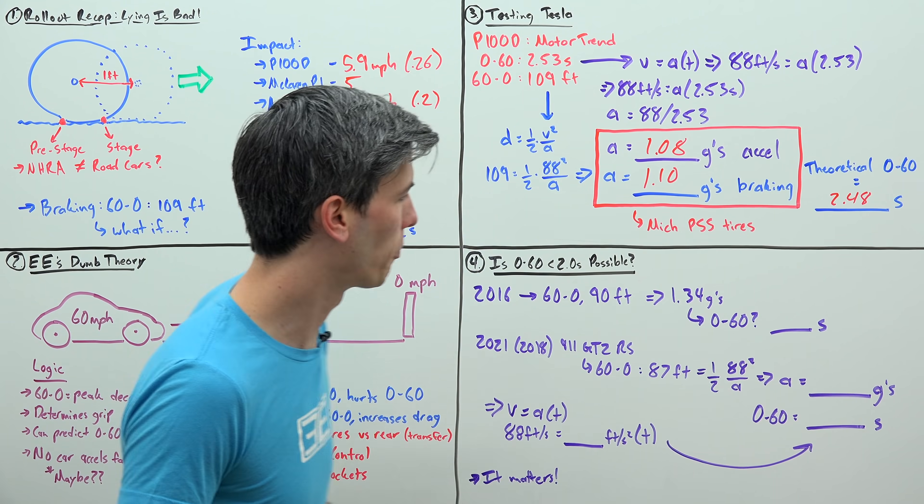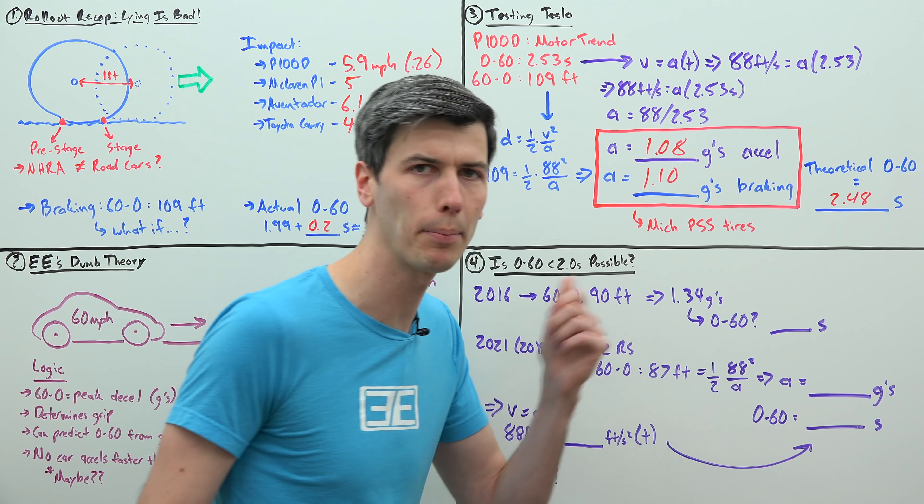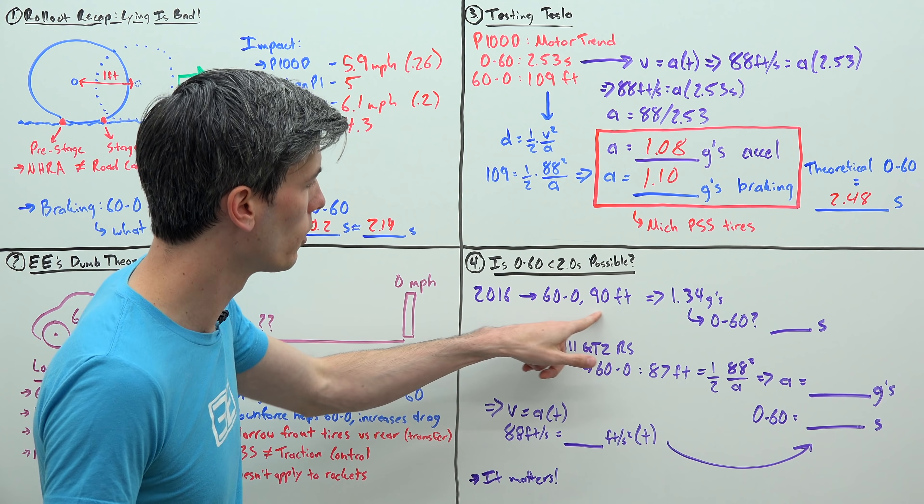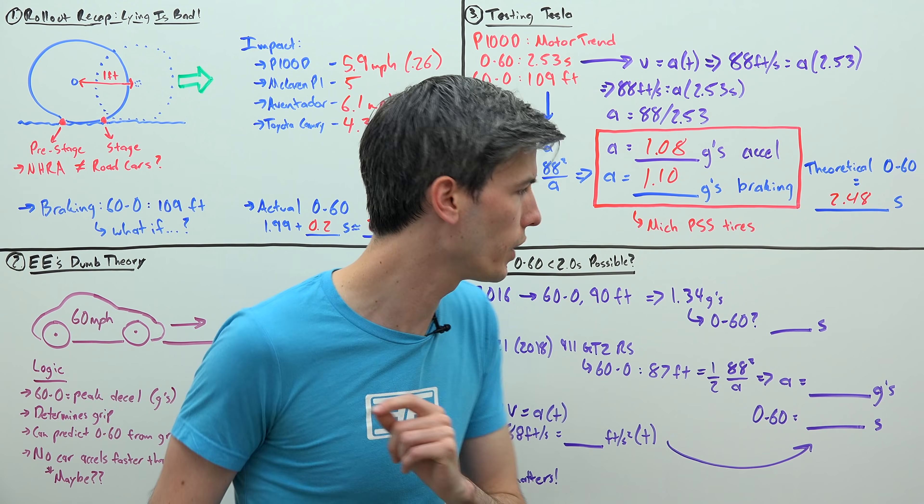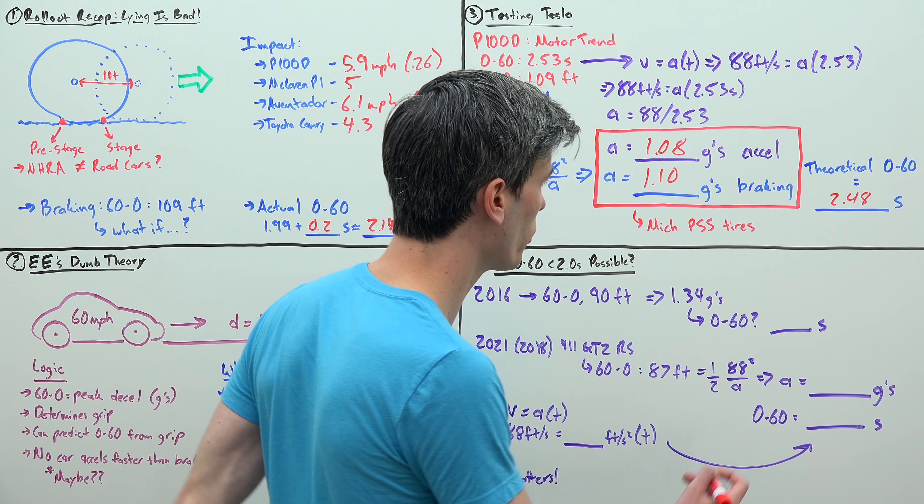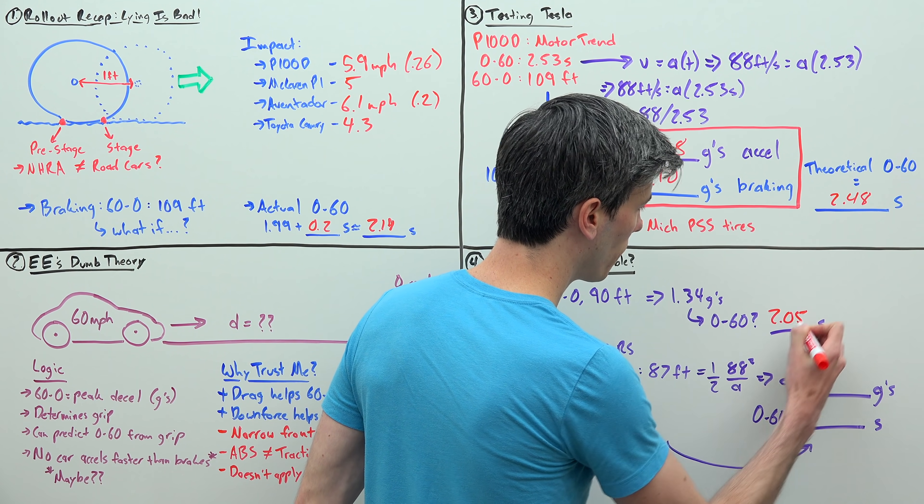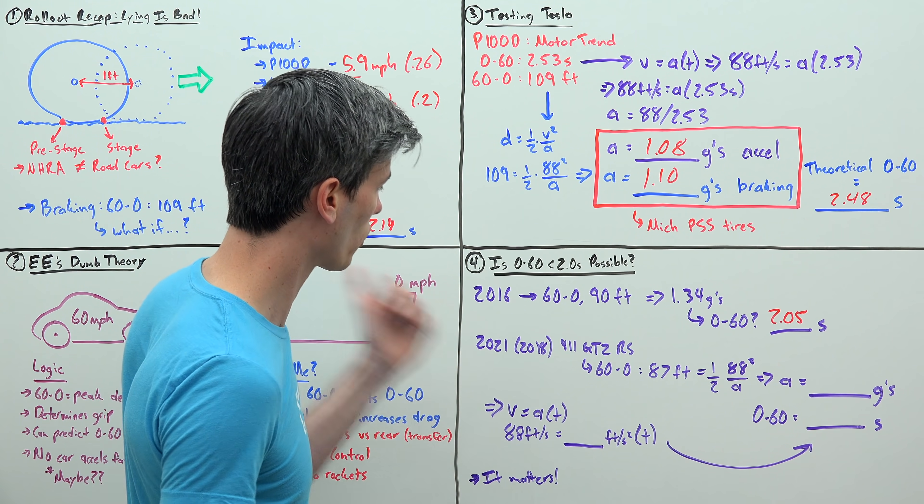So I did this little exercise back in 2016, and I said that based on the best stopping distance we saw of any production car, which was 90 feet, which means a deceleration of 1.34 g's, the best 0 to 60 possible in a production car in the year 2016 would be 2.05 seconds. Now that was 2016. Tires have gotten better since then.